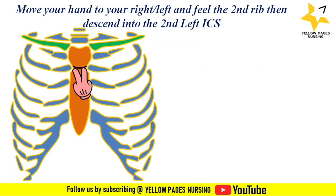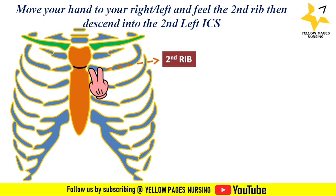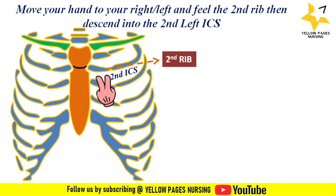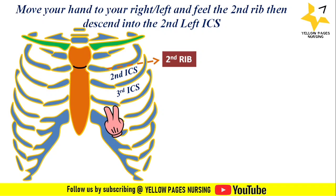After identifying the sternal angle, move your hand to the right or left side and feel the second rib, then descend into the second intercostal space — the space between the second and third ribs. Then descend to identify the third intercostal space, and repeat to identify the fourth intercostal space. Once the fourth intercostal space is identified, placement of electrodes becomes straightforward.